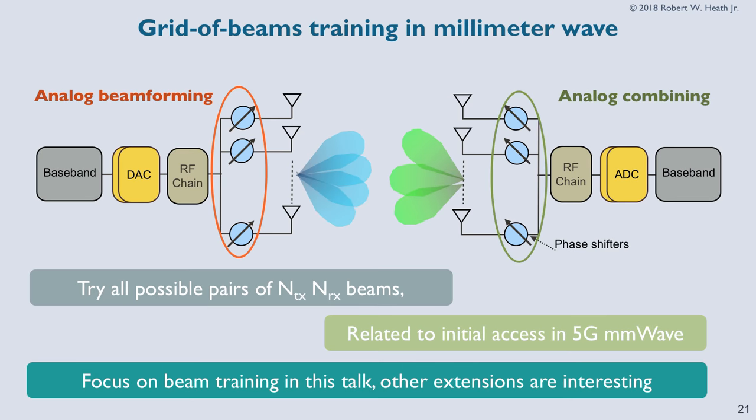Beamforming is done in analog because of power consumption constraints — you can't afford a high-dimensional digital MIMO system operating at giga-samples per second. In this case, we have single-stream beamforming with a large array — 64 or 256 elements at the transmitter, possibly at the receiver as well. We do analog beamforming and analog combining. By selecting those weights, we form a directed beam that points in some direction.